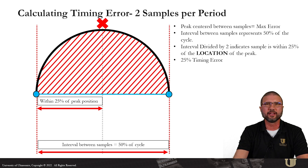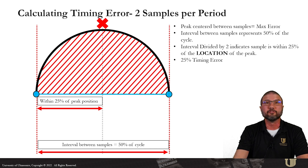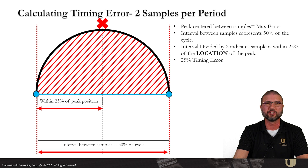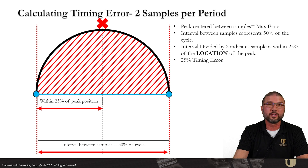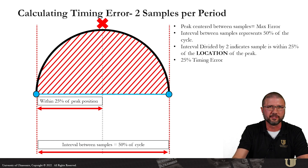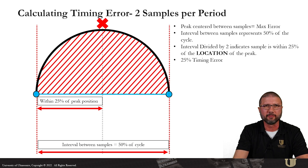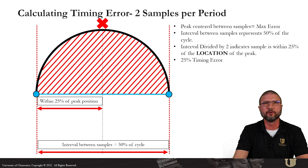Since we're dividing the period by two, the interval between samples is going to represent 50% of that cycle. Divide that by two again and you will see how close in percentage the sample is to the actual location of the peak. So in this case we're within 25% of the location of the peak — a 25% timing error. We've lost the amplitude and the signal entirely. We're not within 25% of the amplitude of the peak — we'll have to cover amplitude fidelity on the next video.